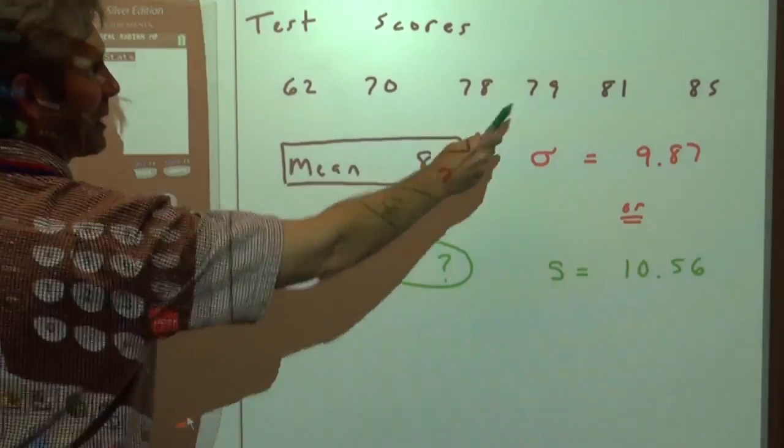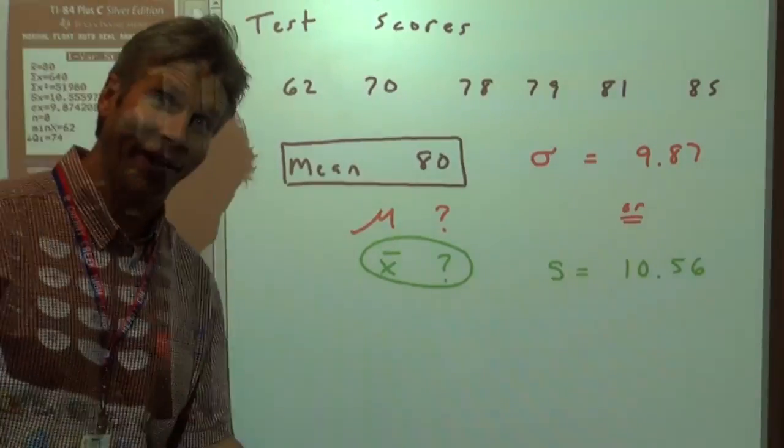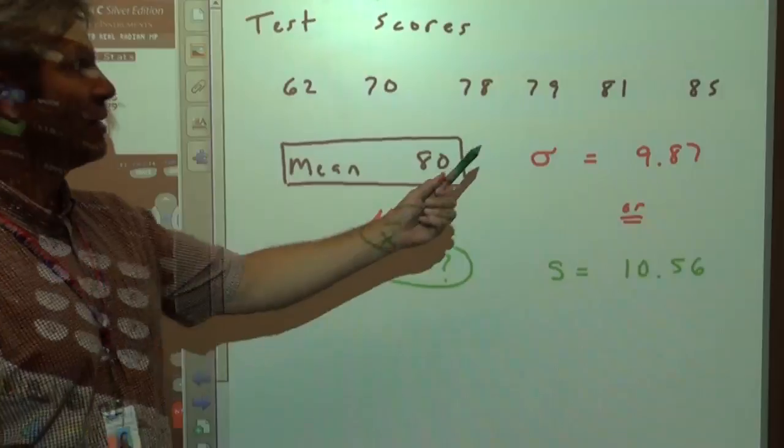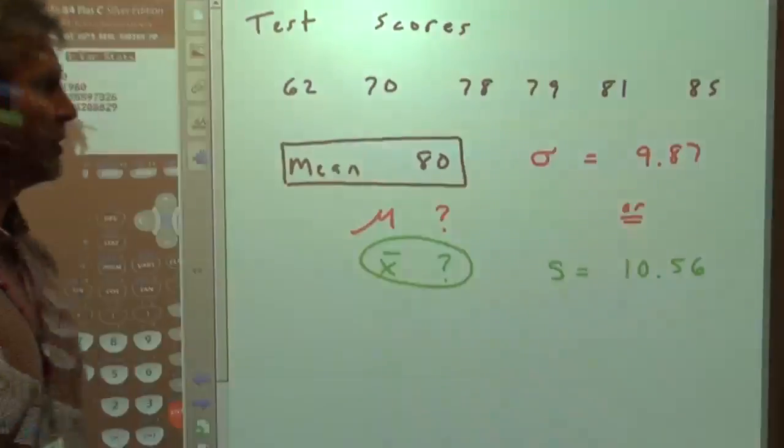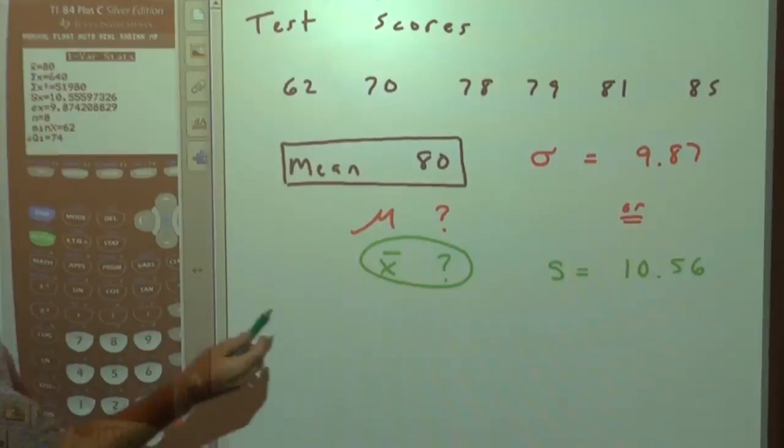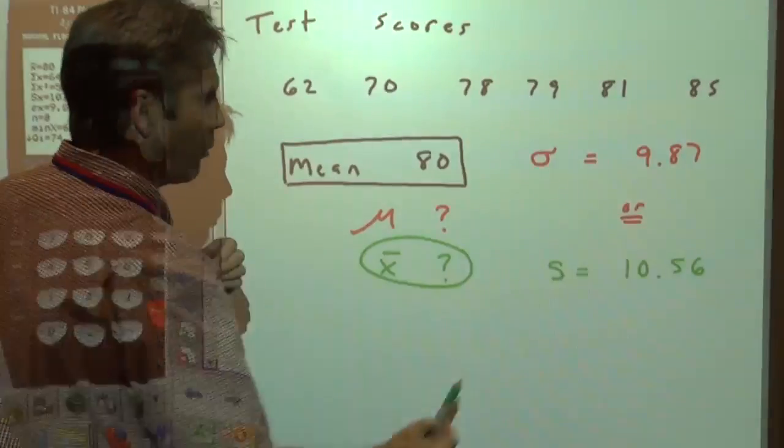That's sample standard deviation and this is population standard deviation. So you have to know, if this is a population like we're down to eight students, and I chased all the others away so I have less grading to do. We're down to eight students. So this class is an entire population. Then the standard deviation would be sigma and it's this guy right here. But if these eight scores are a sample from a bigger population, then we are to use s, the sample standard deviation. That's 10.56.